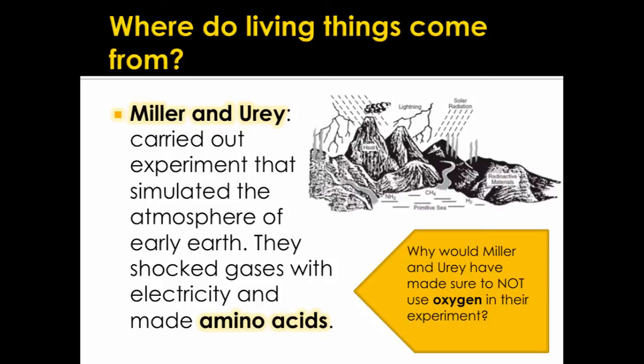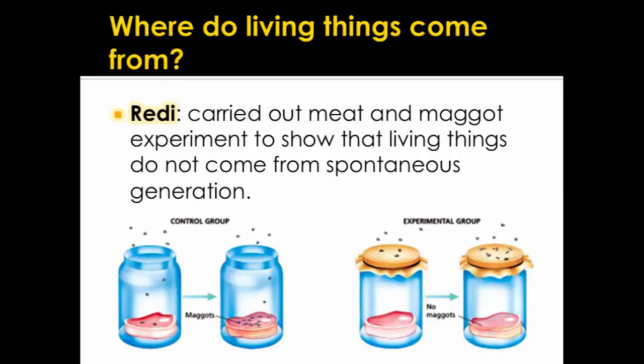Miller and Urey did not use oxygen in their experiment because there was no oxygen on early Earth. The shocks of electricity in their experiment represented the shocks of lightning on early Earth.